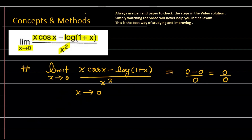How is the numerator giving 0 minus 0? You can see that cos(0) is 1, but since x tends to 0, that quantity converts to 0. And log(1+0) = log(1) also approaches 0. So the numerator tends to 0, the denominator also tends to 0 — the form is indeterminate: 0 upon 0.